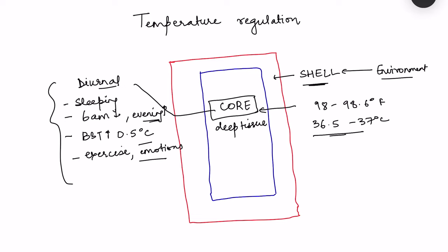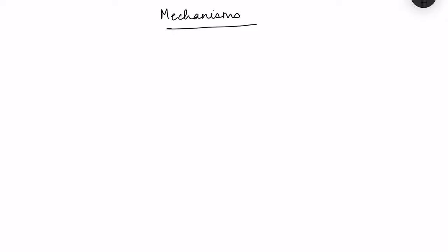Apart from normal variations, this core body temperature has to be kept within a very narrow range. Metabolic processes are always going on within cells, and due to these metabolic processes there is generation of heat. So even if the environmental temperature is much closer to the body temperature, this heat generation is always ongoing and needs to be lost. Temperature is always a balance between heat gain mechanisms and heat loss mechanisms.